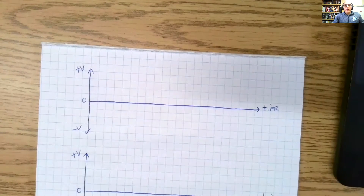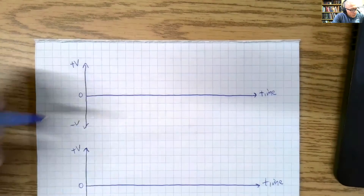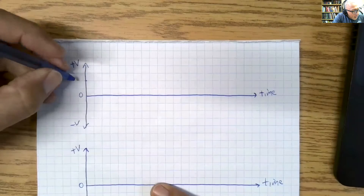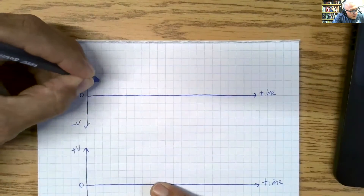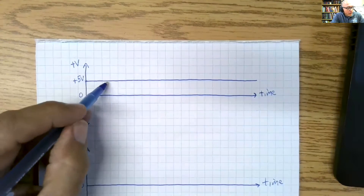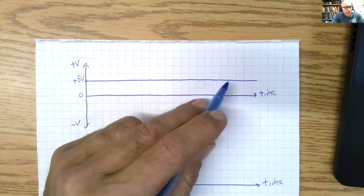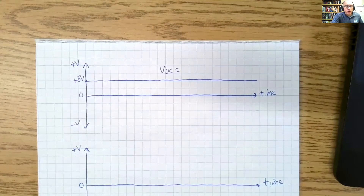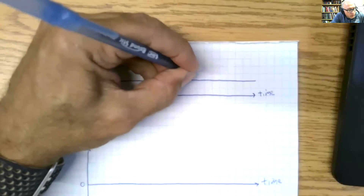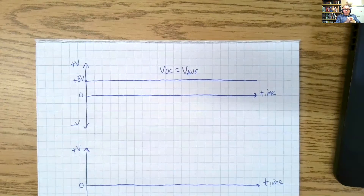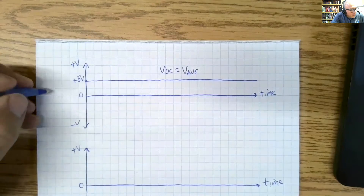DC is direct current, and what that means is that wherever the voltage is, that's what it stays at. So if we had positive 5 volts, it stays at positive 5 volts. If we were to plot that over time, it would be positive 5 volts consistently. So VDC — we're going to start using another term called V average. VDC is the V average, the average voltage. That is direct current.